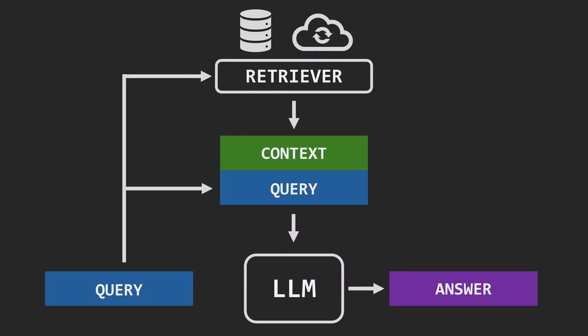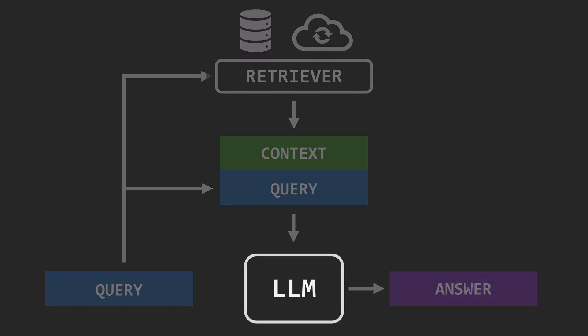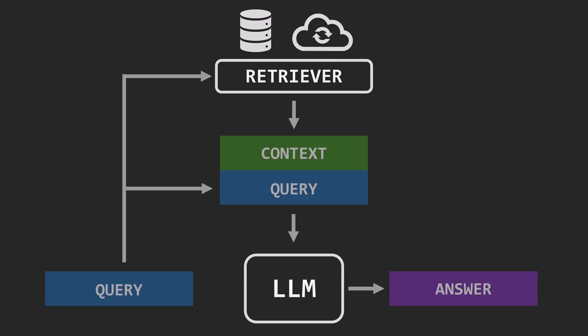In conclusion, RAG blends two types of memory: parametric — the model's internal knowledge — and non-parametric — external, retrievable knowledge. This approach enhances accuracy, reduces hallucinations, and enables customization of the model's knowledge base. It's a major step toward bridging the gap between static pre-trained models and dynamic, knowledge-rich systems. The original RAG framework has evolved with numerous improvements in chunking strategies, embedding techniques, context augmentation, passage ranking, and fine-tuning methods — so many interesting enhancements that they truly deserve a separate video.